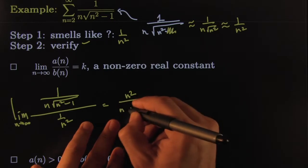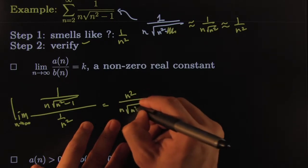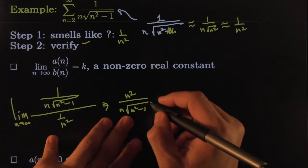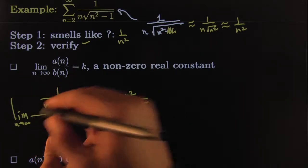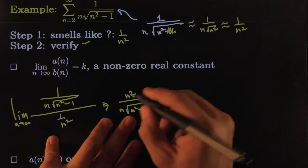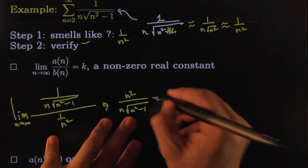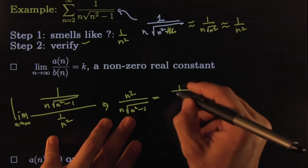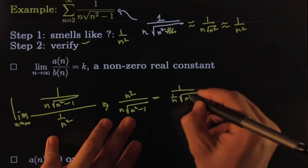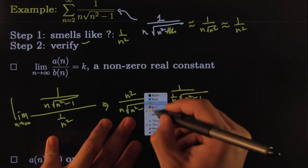This would be n squared all over n times the square root of n squared minus 1. Of course, it's not equal, the limit of that is equal to the limit of this, but I'm way too good to be writing limit all the time, so I just write little arrows. Okay, maybe I could divide everything by n squared.